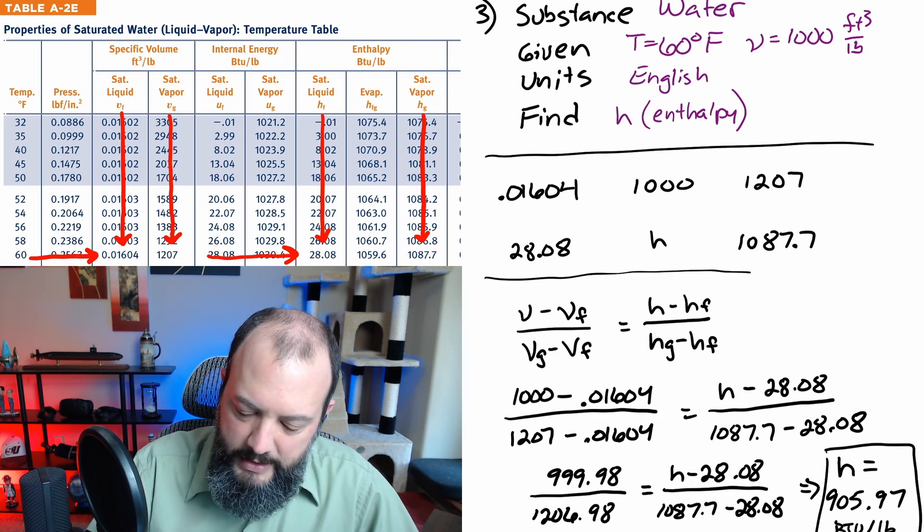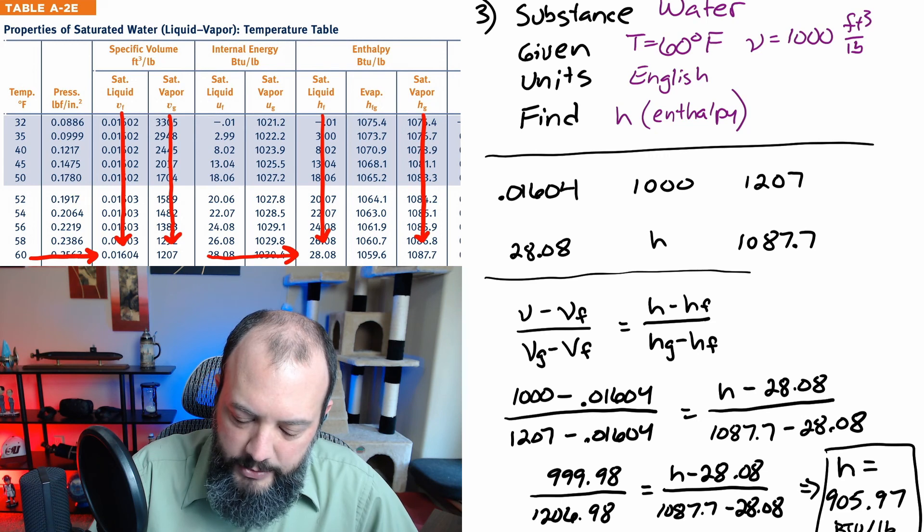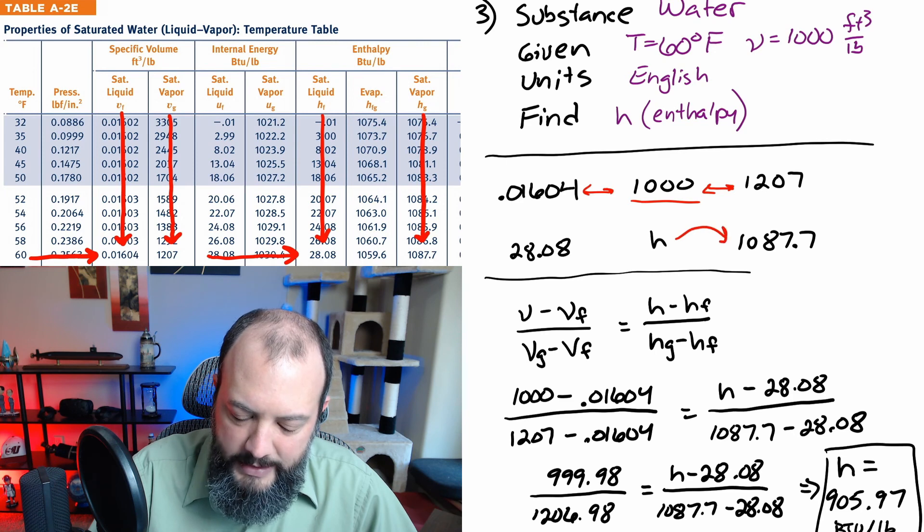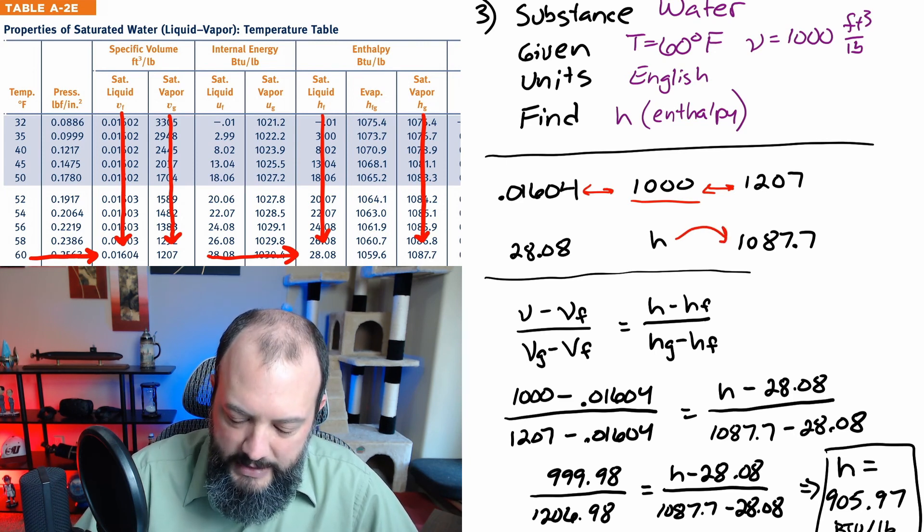In order to check whether this answer makes sense, we're going to look at the initial 1000 that we started with and note that it is much closer to the 1207 than to the 0.01. So that means H should be much closer to 1087 than to 28 and an answer of 905 seems to fit that description.